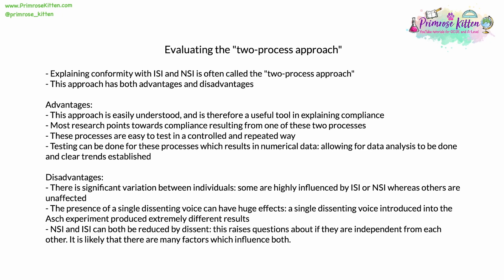Explaining conformity with ISI and NSI is called the two-process approach, which has advantages and disadvantages. The advantages: this approach is easily understood and is a useful tool in explaining conformity, especially to people unfamiliar with psychology. Most research points towards conformity resulting from one of these two processes. They are also easy to test in a controlled and repeatable way under laboratory conditions, typically producing numerical data that allows for statistical analysis and the establishment of clear trends.